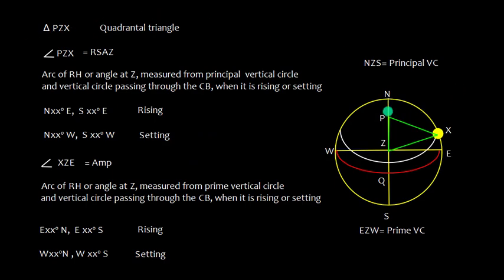We have this triangle, and this is called a quadrantal triangle, which means one side is 90 degrees. If you divide 360 degrees by 4 you get 90 degrees, so each part of this circle represents 90 degrees. Although it appears as a straight line, these are actually great circles. This PZX is a spherical triangle, and in this spherical triangle the angle PZX is the Rising Setting Azimuth.